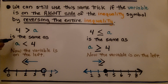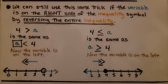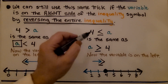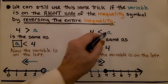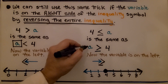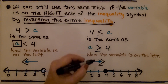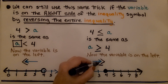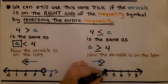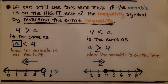It's really important to remember that the variable must be on the left side. If we have 4 is less than or equal to A, we flip the whole thing: put 4 on the right, A on the left, and reverse the sign. Now the variable is on the left and we can use the symbol as an arrowhead. With 'or equal to,' there's a filled-in dot, and we know it could be 4 or any number greater than 4.